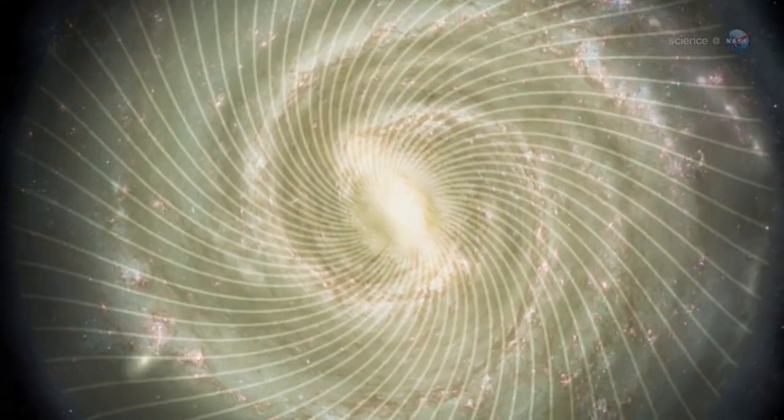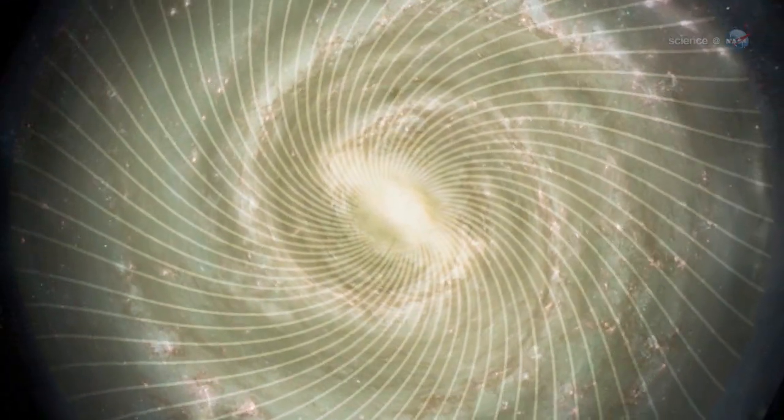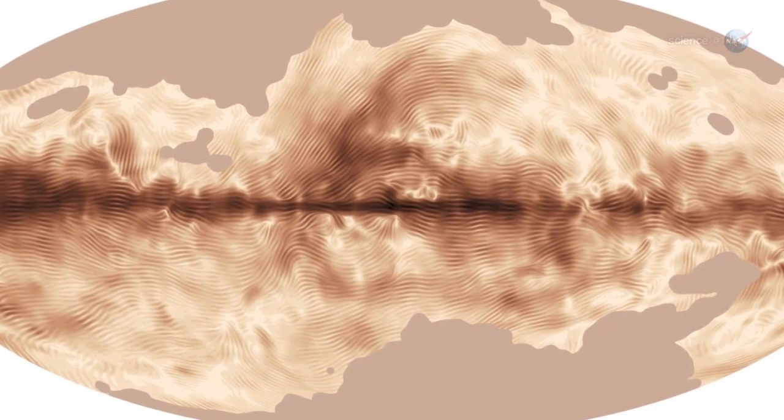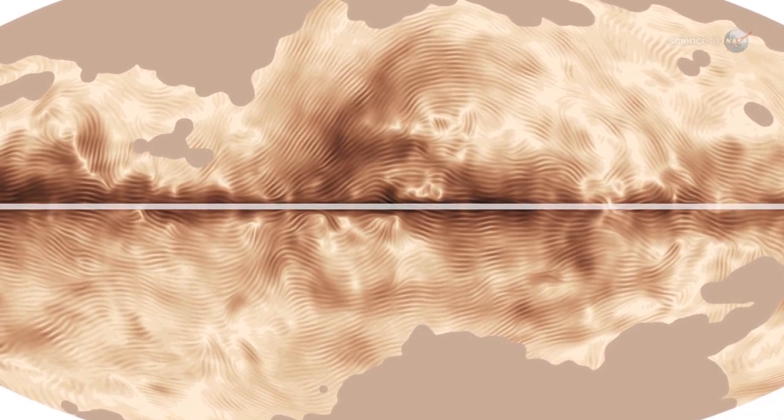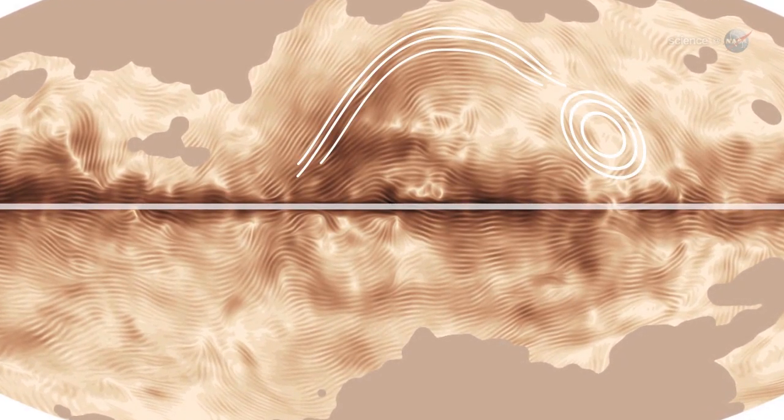If we could see our galaxy from the top down, she says, the magnetic field would have a spiral shape. Because Planck sees the Milky Way edge on, however, the spiral field appears to line up parallel to the galactic plane. There are also many graceful arches and loops that trace the shells of nearby supernova explosions.